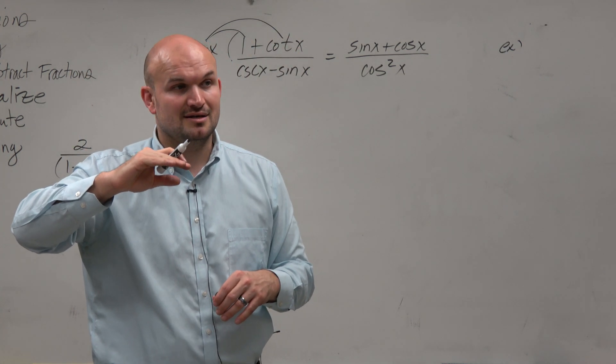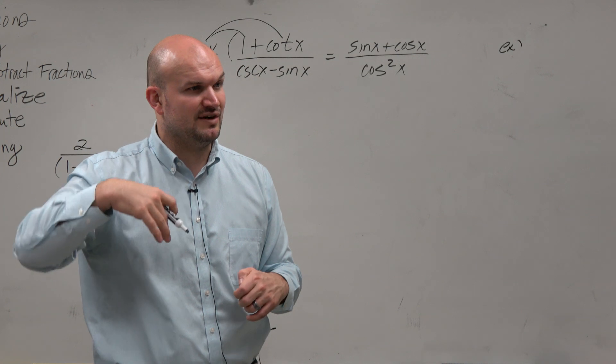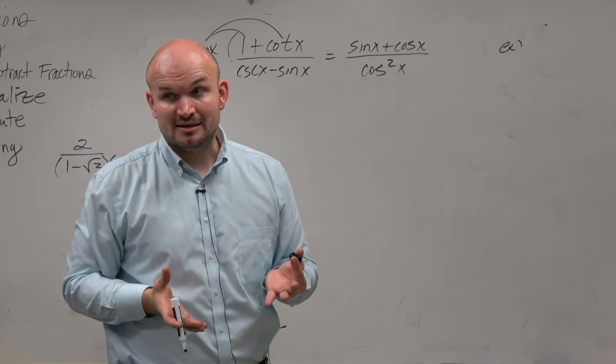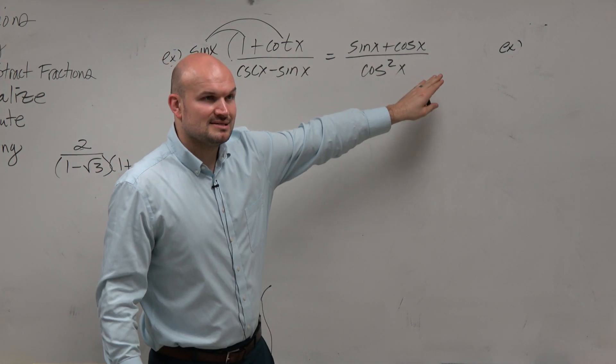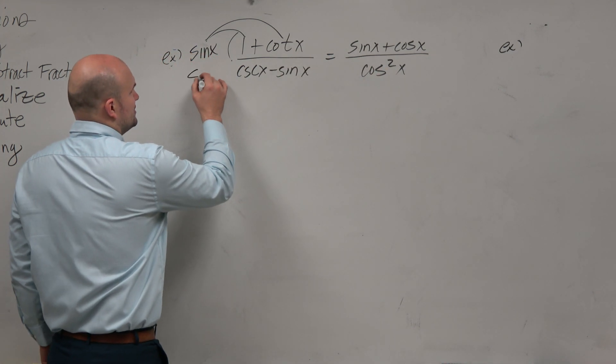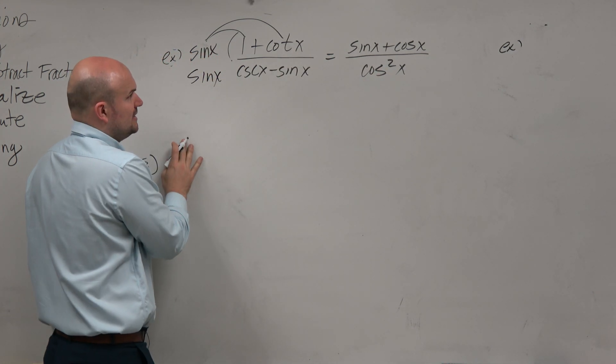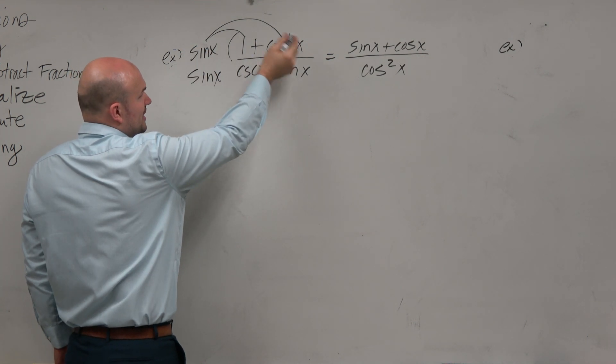Cotangent is cosine over sine. So sine times cotangent would give us cosine. So just by multiplying my numerator, I get that. So therefore, let's do it to the denominator, and let's see how close we can get here.